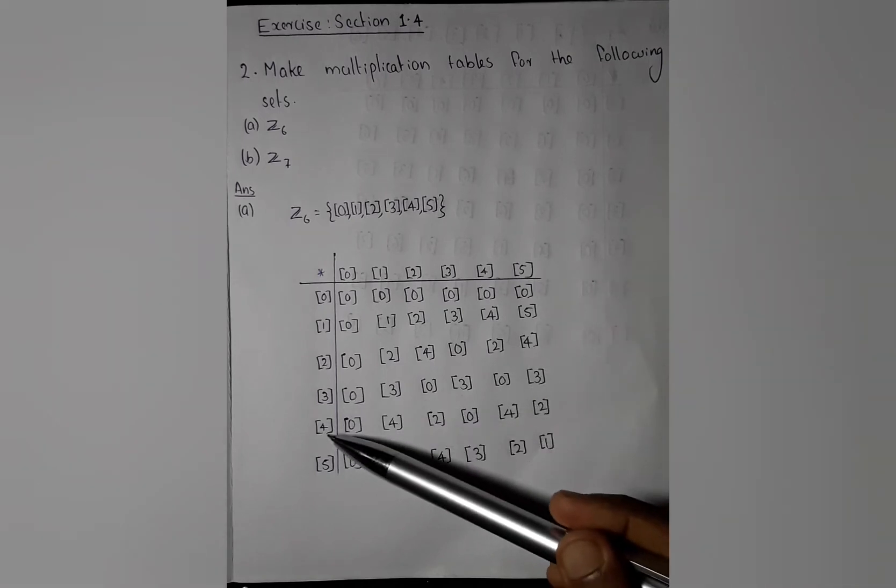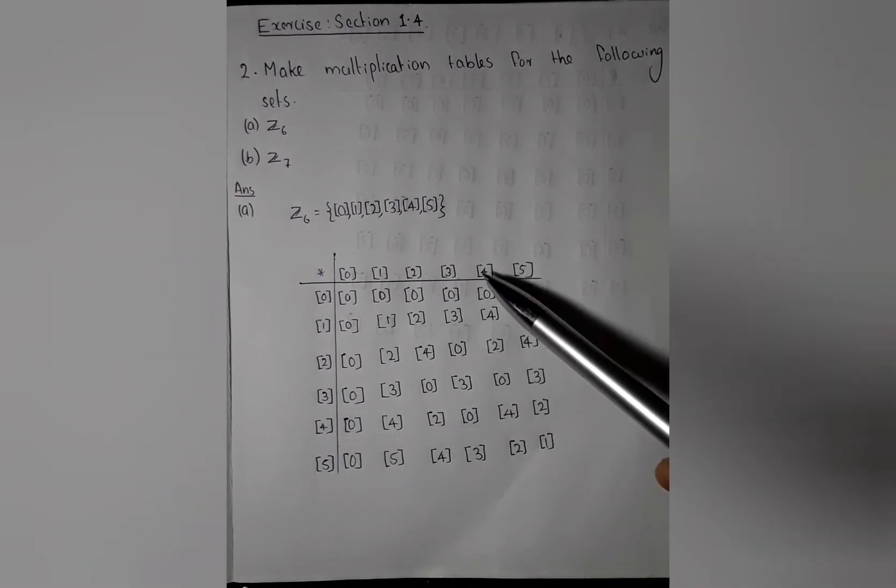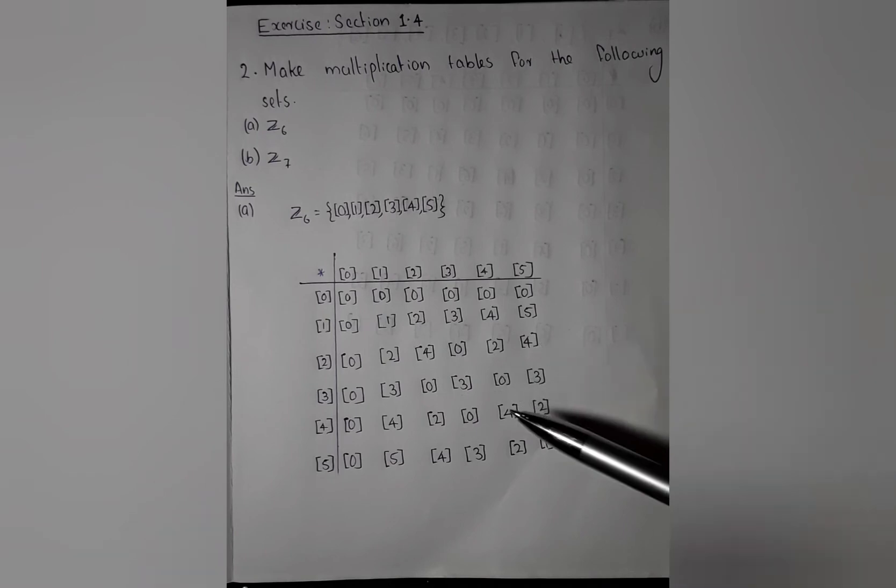Let's check one more. 4.4 is actually 16. When divided by 6, we get the remainder 4. So we can write 4 modulo.